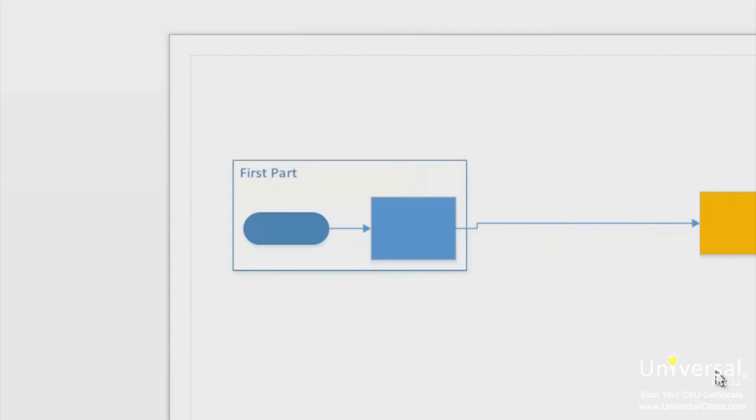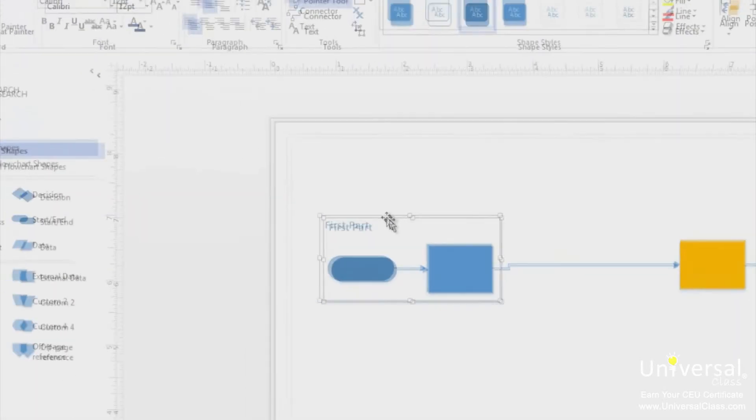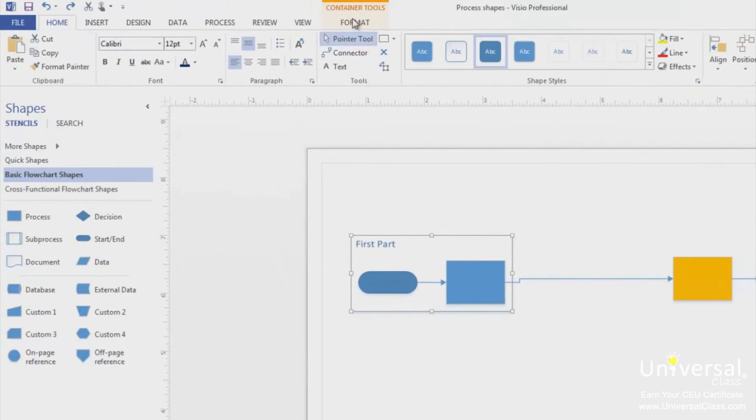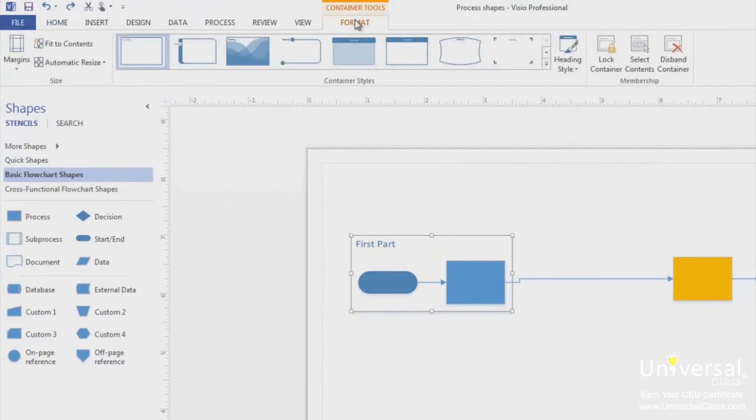Visio 2013 gives you tools to format your containers so they look like you want. To format a container, first select the container. You will then see the container tools format tab appear on the ribbon. Under this tab, you can set the margins for your container.